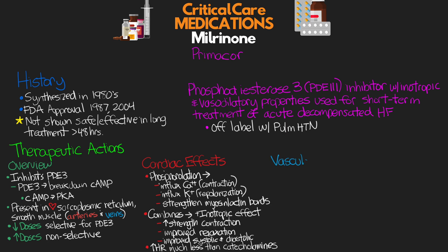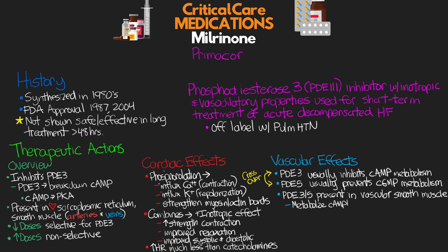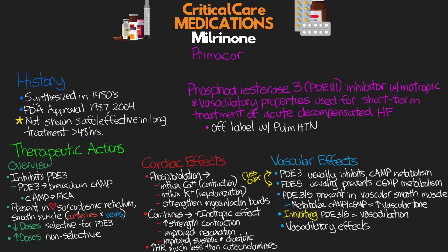Now let's talk about vascular effects. PDE3 usually prevents cAMP metabolism, while PDE5 — acted on by other inhibitory drugs such as sildenafil — usually prevents cyclic GMP. Both of these can cross over and prevent metabolism of either one. PDE3 and PDE5 are both present in vascular smooth muscle, and by metabolizing cyclic AMP and cyclic GMP, they help increase vascular tone. By inhibiting PDE3, we prevent the metabolism of primarily cyclic AMP but also some cyclic GMP, which produces vasodilation in arteries, veins, and within the pulmonary vasculature, helping to reduce PA pressures as well as systemic blood pressure. The vasodilatory effects of Milrinone are stronger than our beta-2 agonists such as dobutamine and isoproterenol.